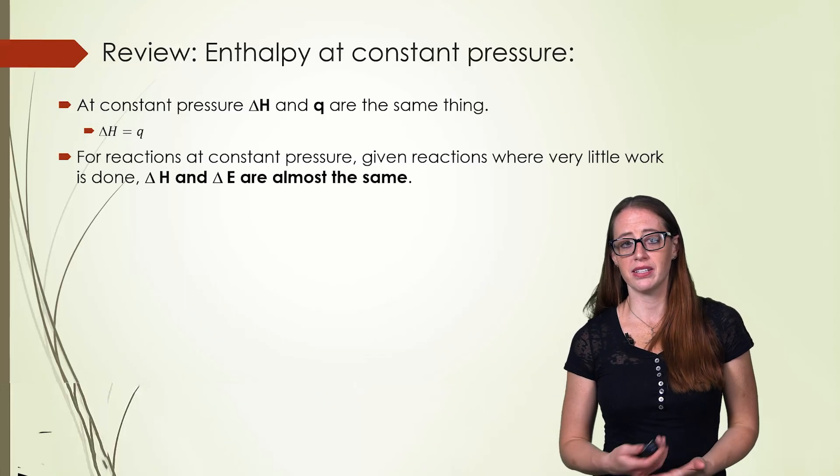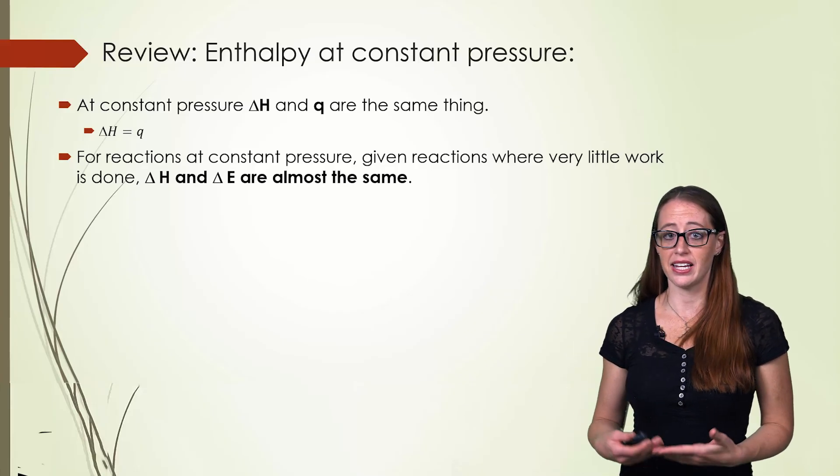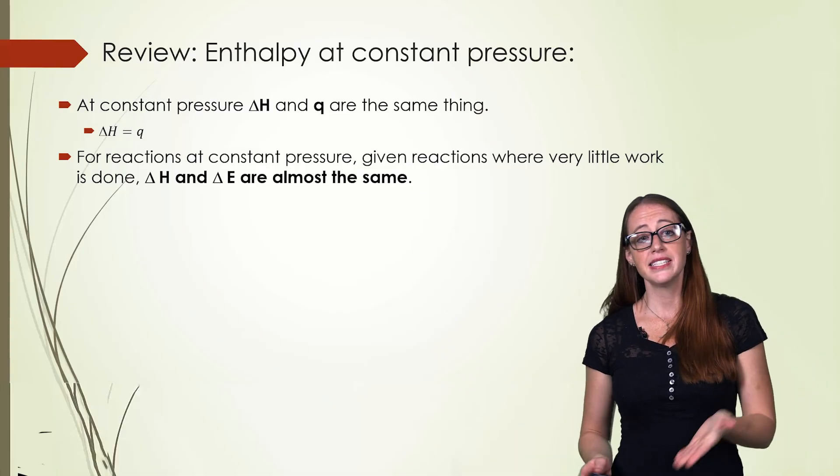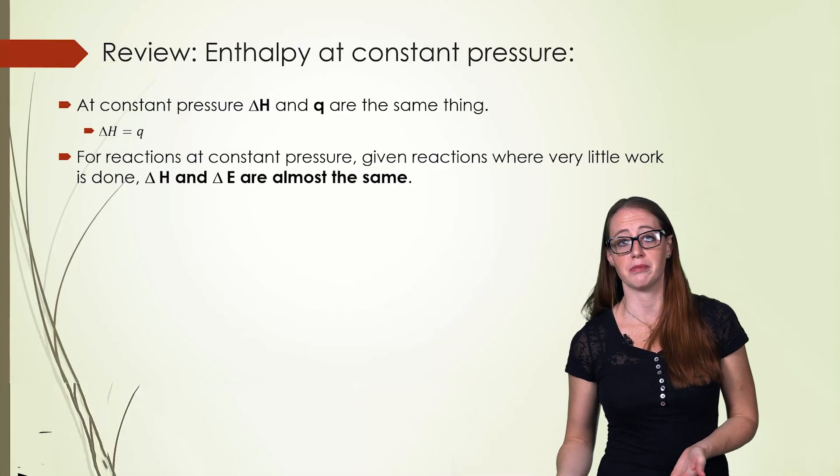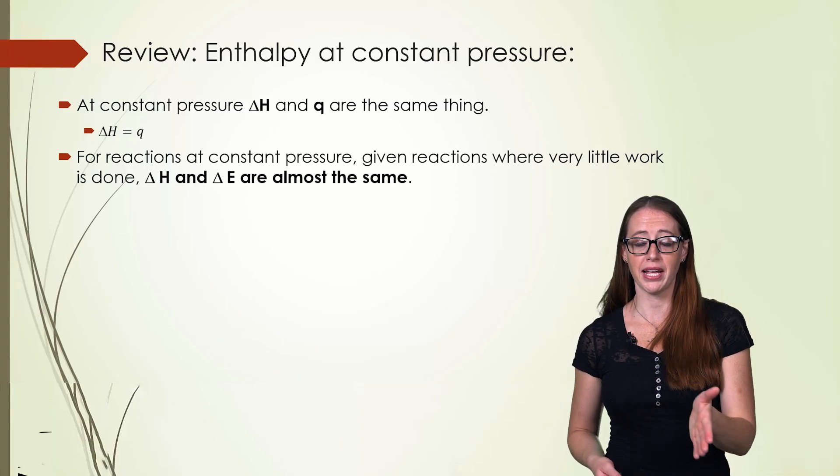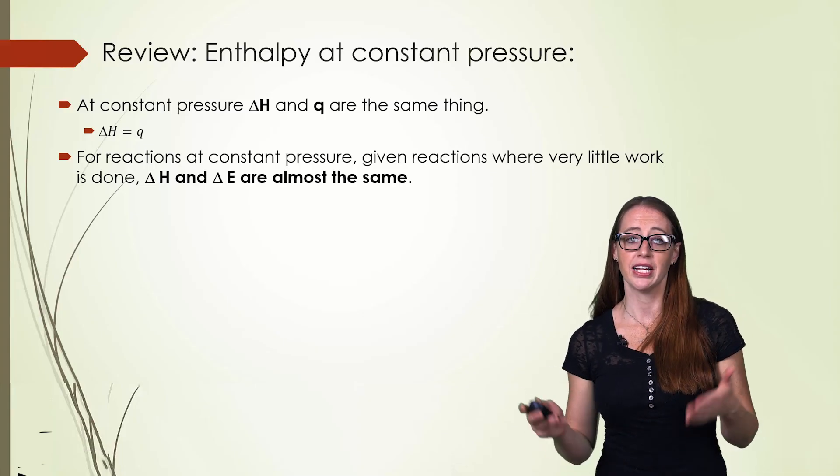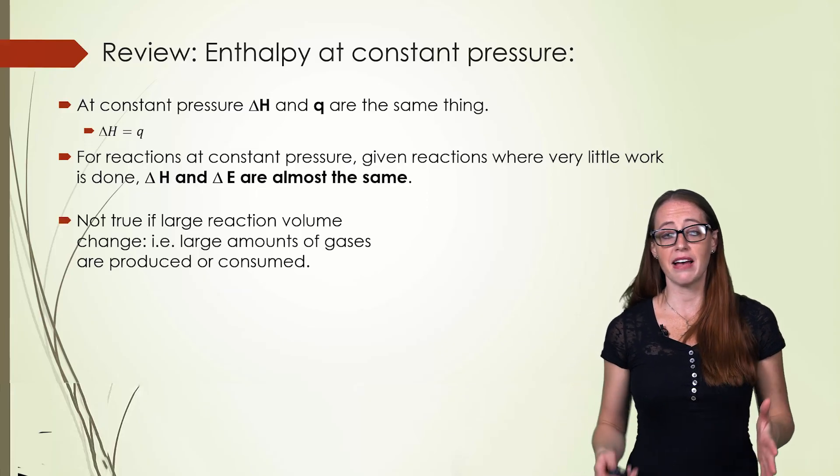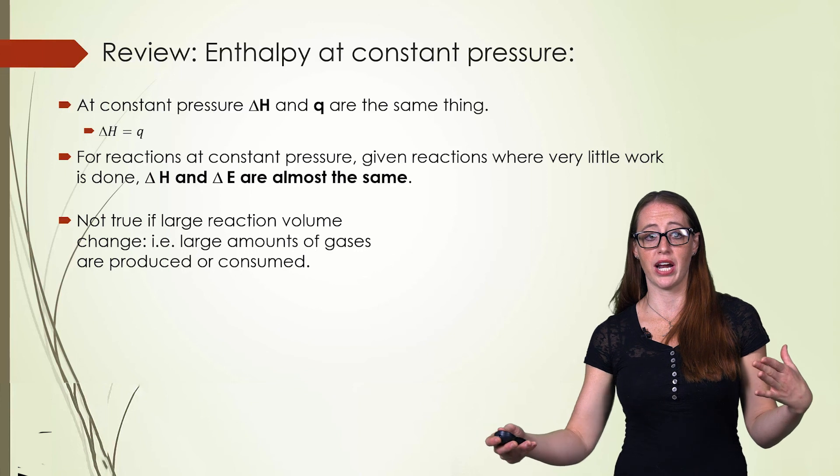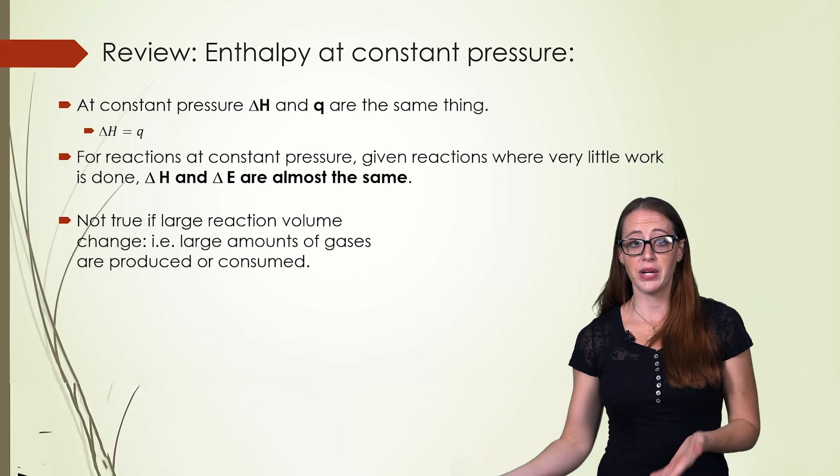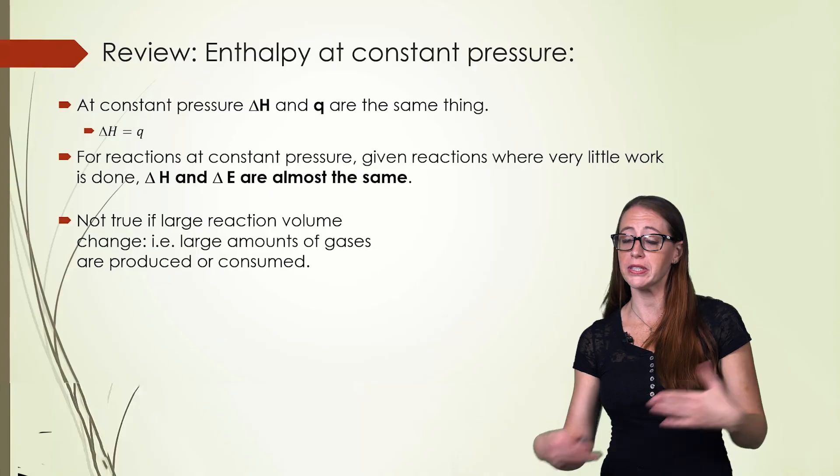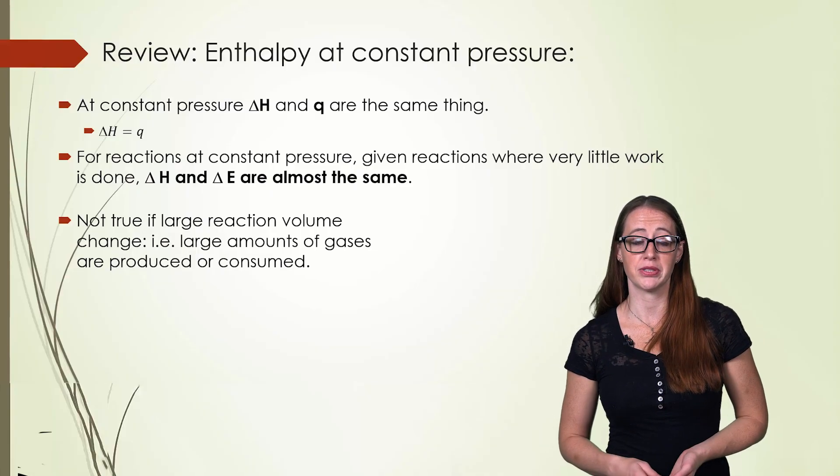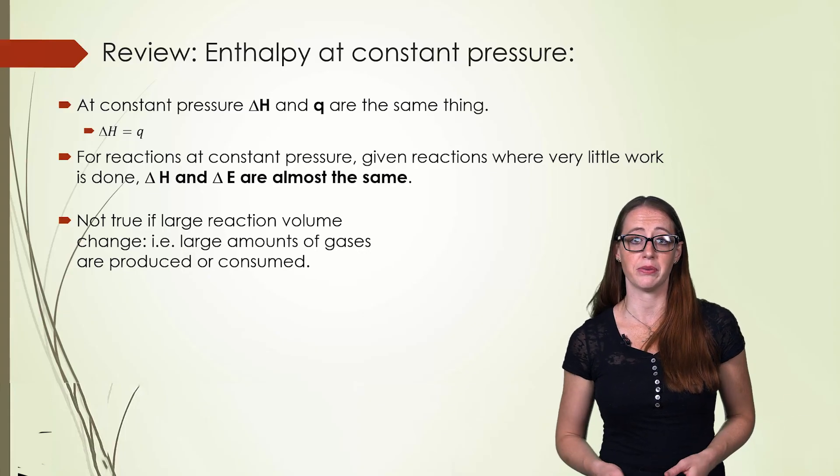Now, this isn't so much review as a little add-on I want to do here. For reactions at constant pressure, if not very much work is done, so there's very little work, delta H and delta E will actually be very similar. And what will happen at that point is your bomb calorimetry and your coffee cup calorimetry will end up being nearly identical. This is definitely not true if you have a large reaction volume change. In that case, you would have to choose to do either bomb calorimetry or coffee cup calorimetry, depending on what you want to get. And you would use our coffee cup calorimetry that we introduced in this video if you want delta H equals Q.